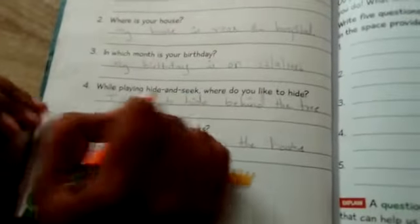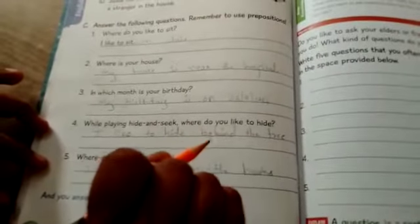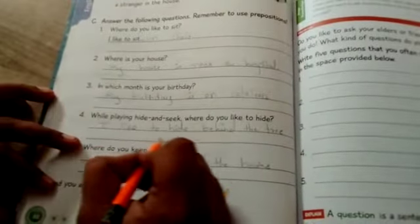While playing hide and seek. While playing hide and seek. Do you like to hide? Where do you like to hide? I like to hide behind the tree. Behind the house. Behind the house. Inside the house. But you have to use their prepositions.